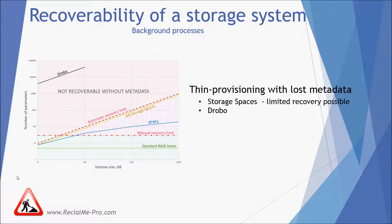Thin provisioning used in Drobo is not activated immediately after deletion, but instead works as a background process when the system is idle. Drobo scans the volume and decides which parts of it are free. It then releases its 4 KB blocks and erases the allocations from the block map. Once the process is done, nothing can be recovered since the entries about the released 4 KB blocks are lost and there is no way to get these blocks back – they are too small. Thank you for watching and good luck with your recoveries!